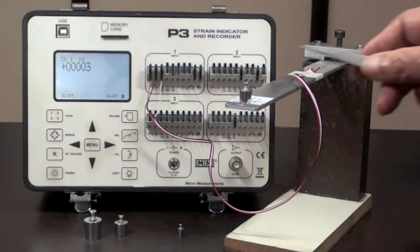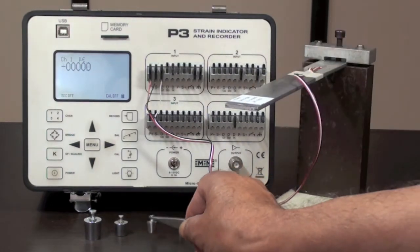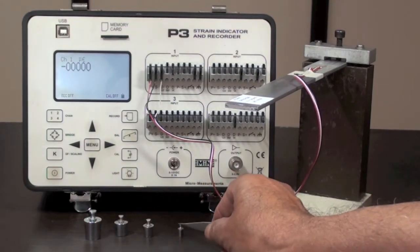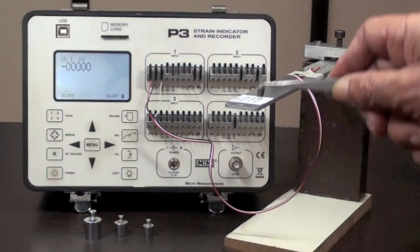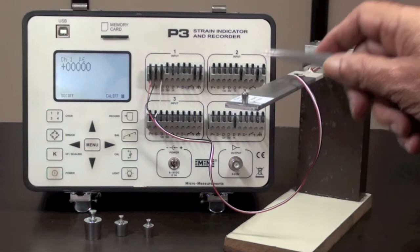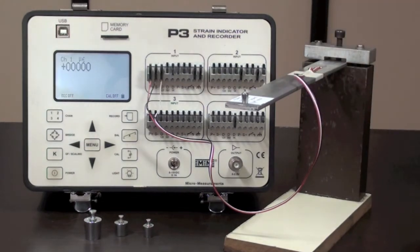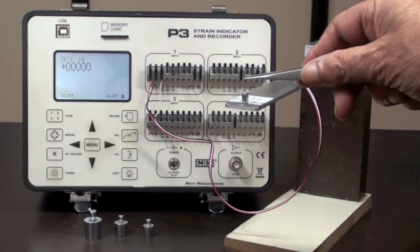And for 1 gram weight, it should be 0.55 microstrain. This does not show on the display as the least possible reading is 1 microstrain.